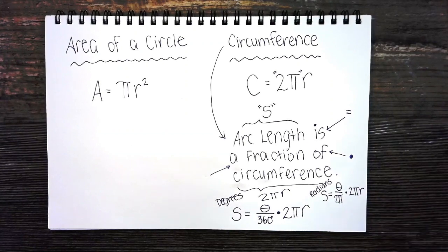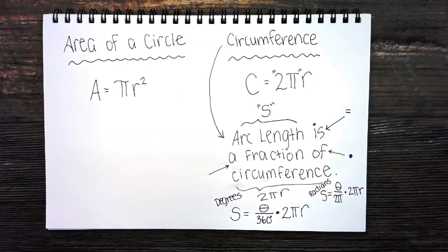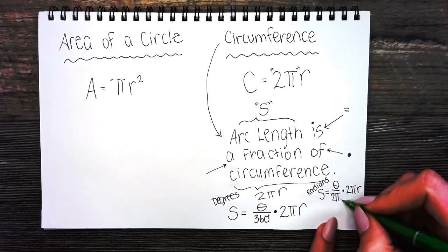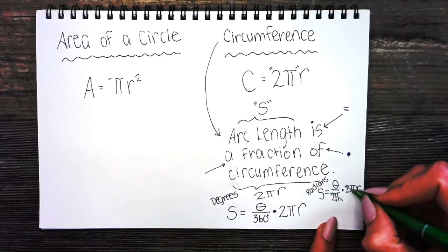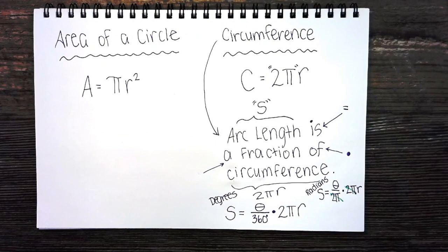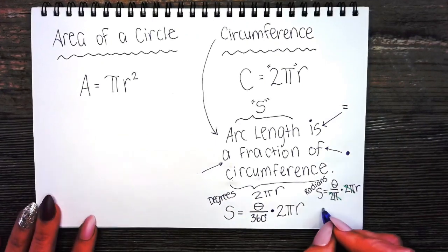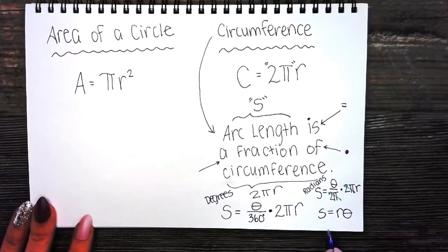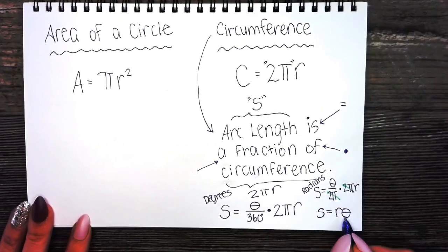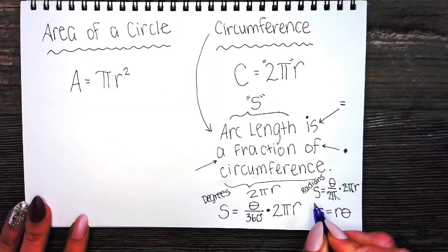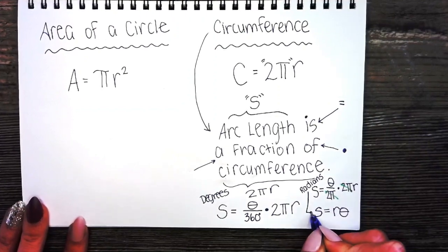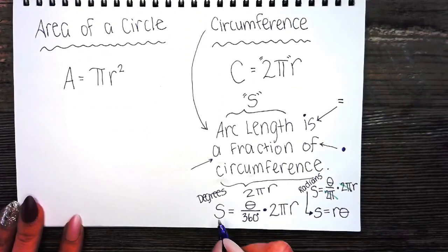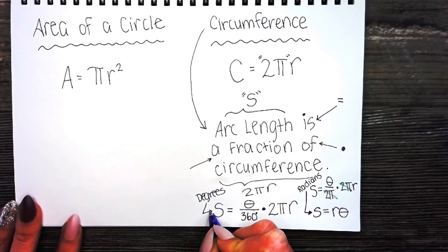This equation can reduce. We have a 2 pi in our denominator and numerator. That reduces down to 1. So you'll often learn a formula for arc length of s equals r theta. This formula only works when your angle is already in radians. If your angle is in degrees, use the other formula.